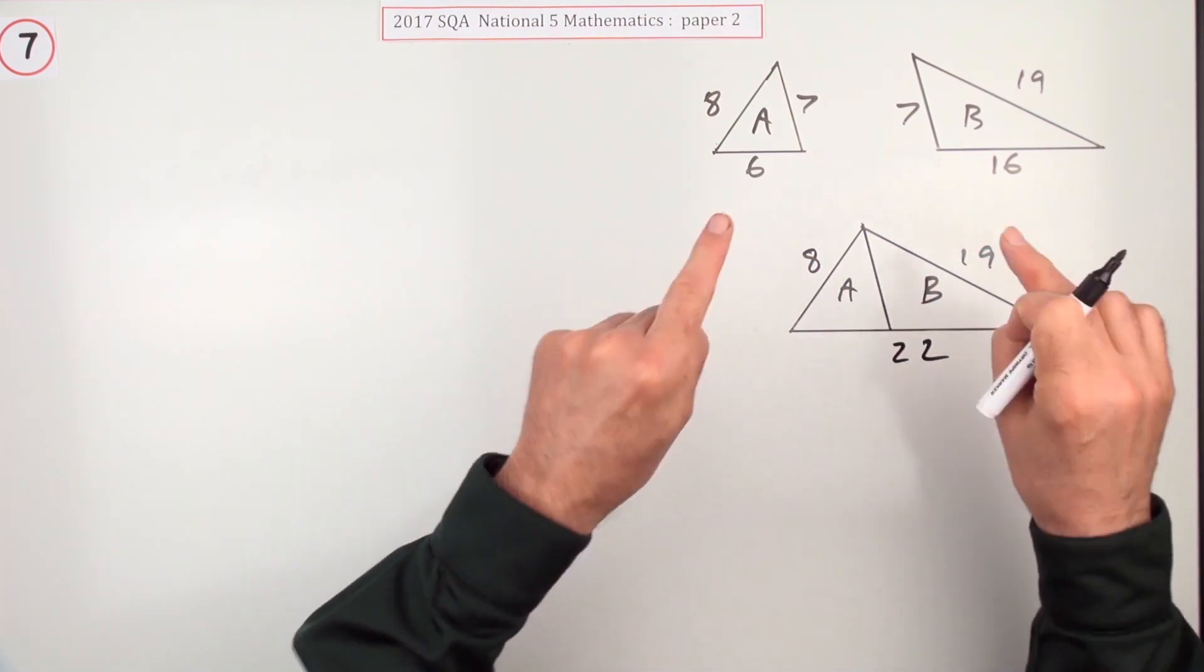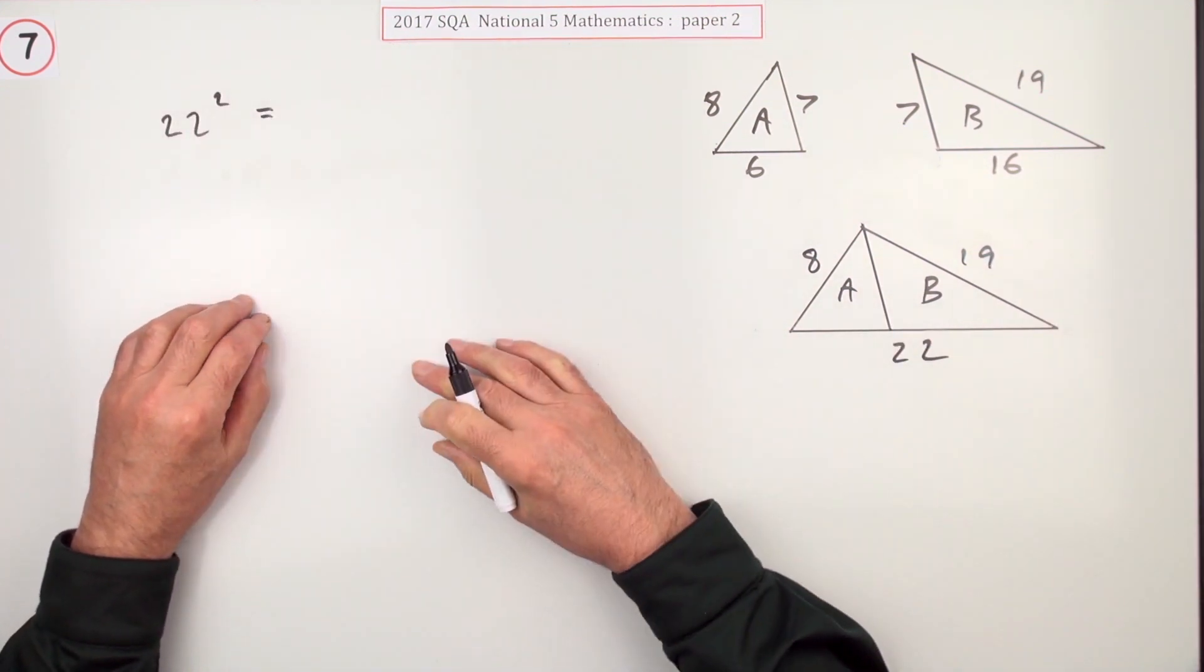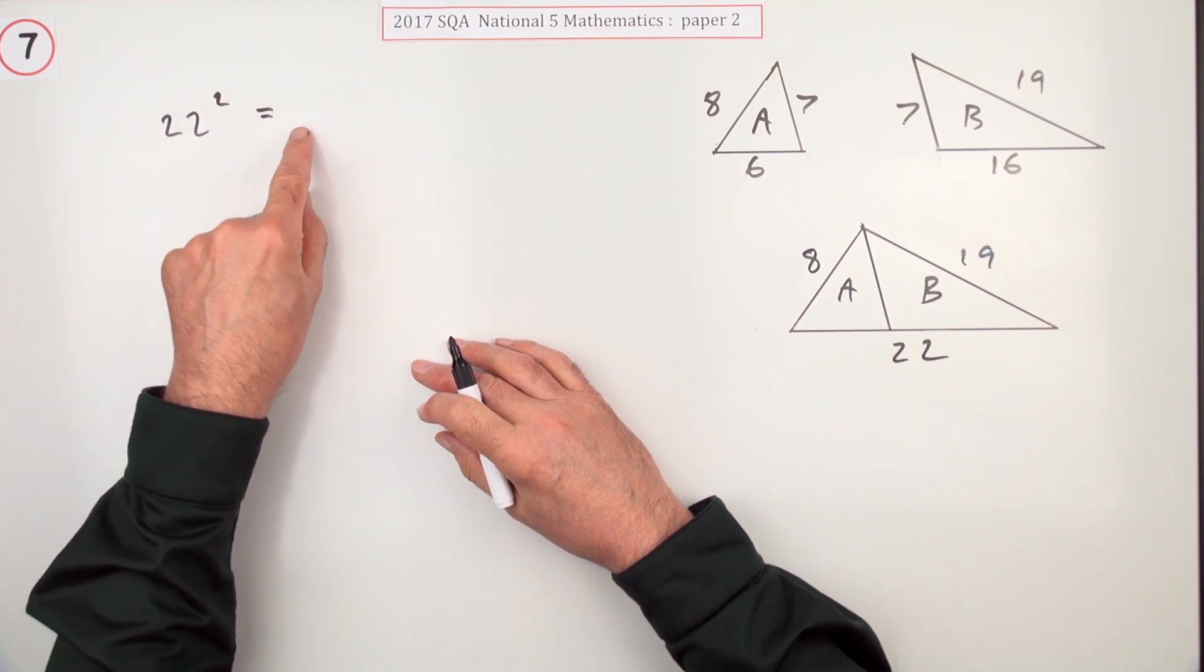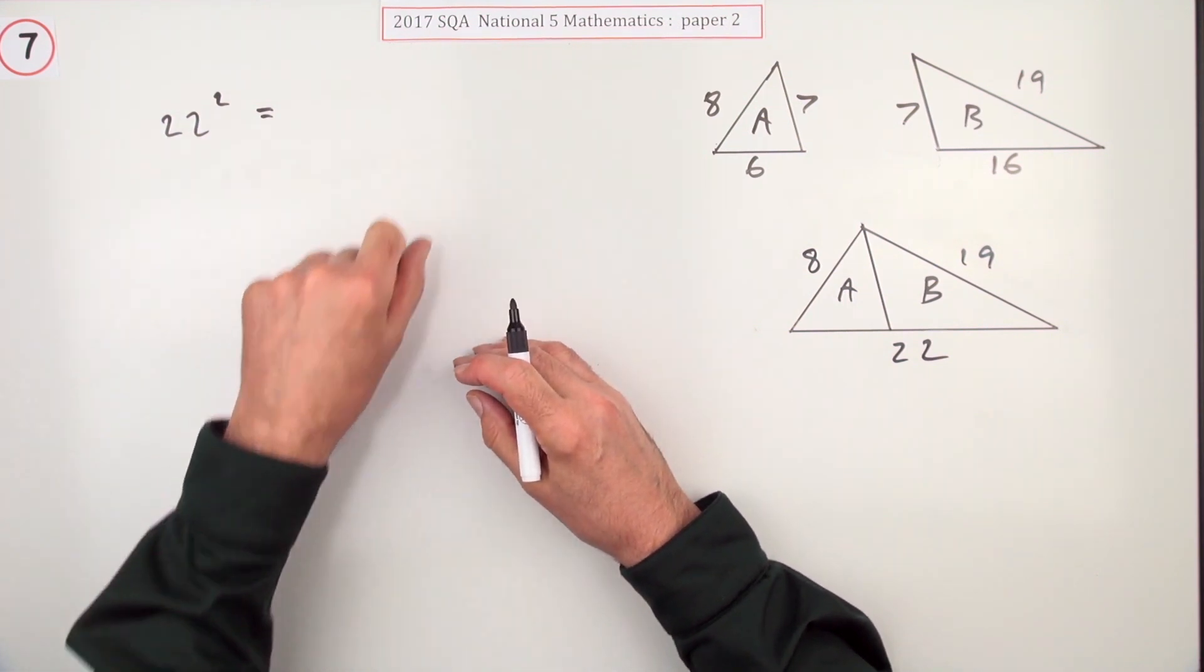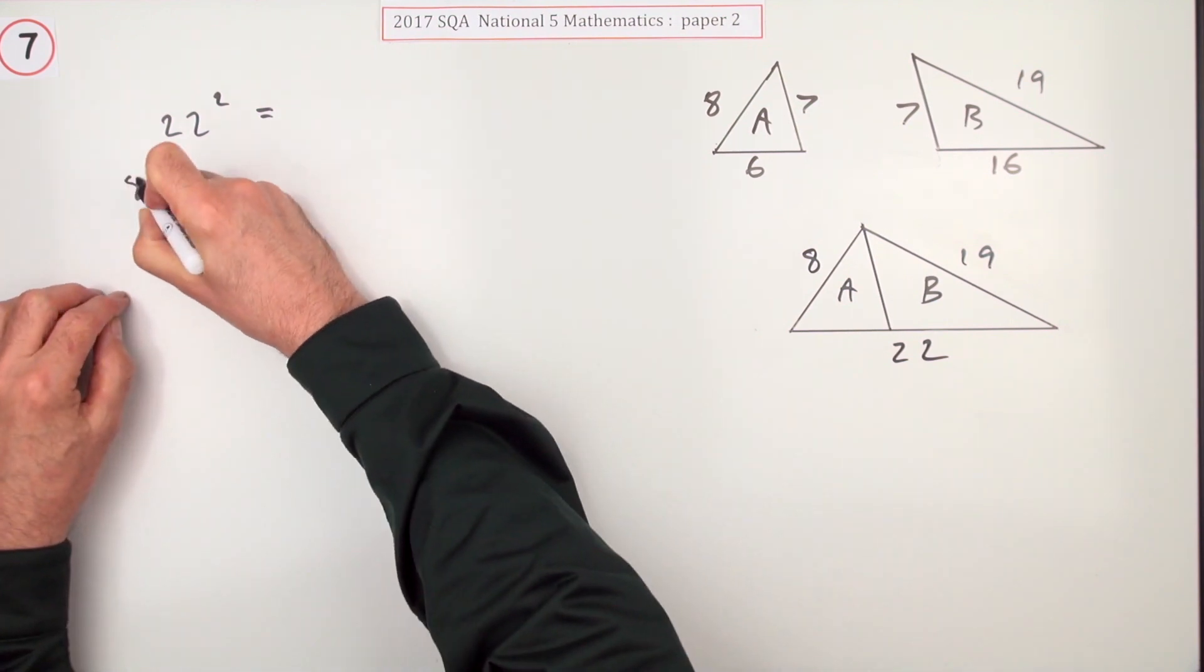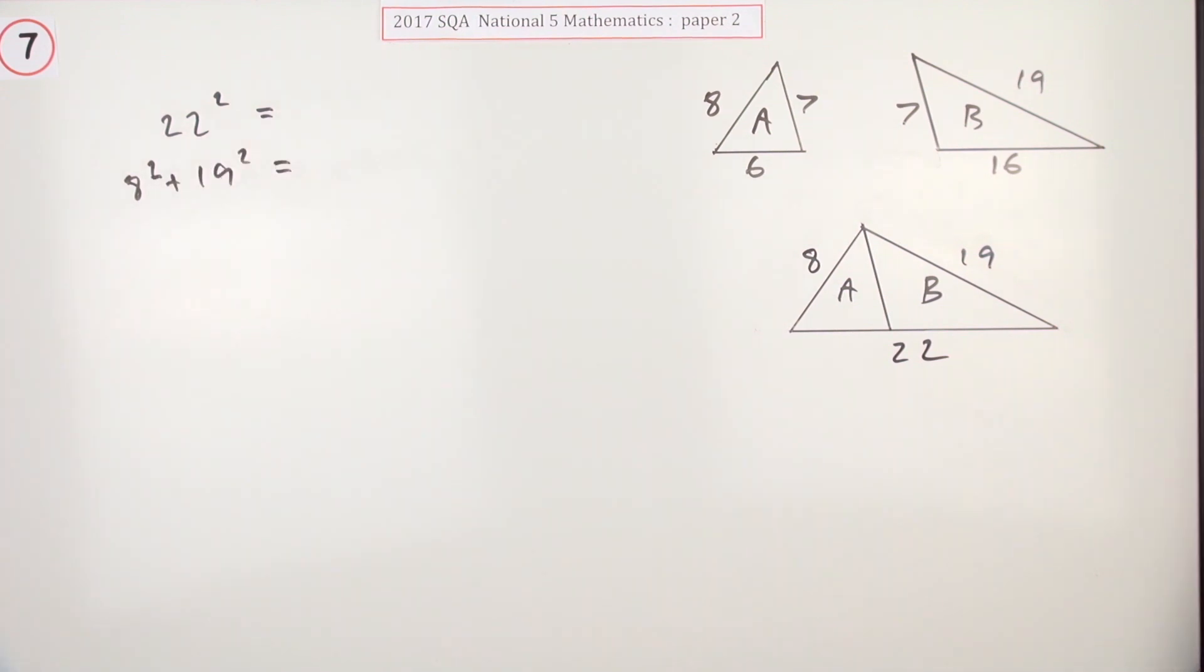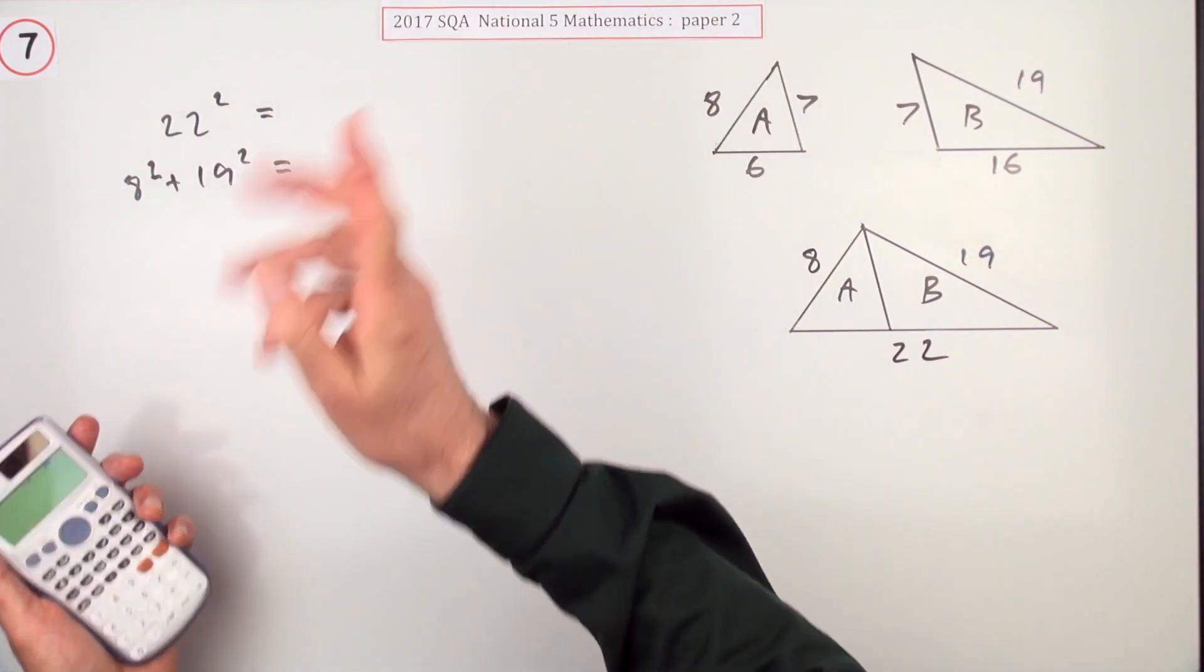So we'll just have to check that then. What is 22²? Now I shouldn't really write 22² equals 8² plus 19² because you don't know if they are, so I'll work out 8² plus 19² separately. Now you're probably just going to reach for your calculator.